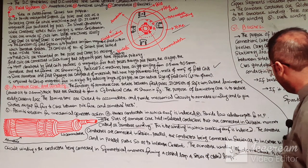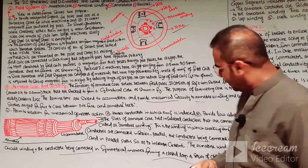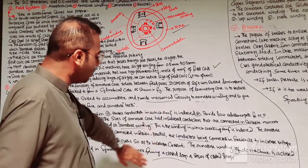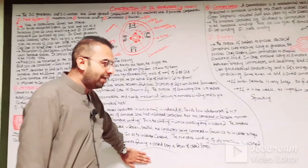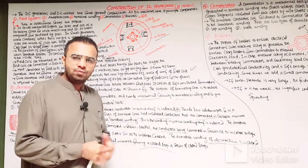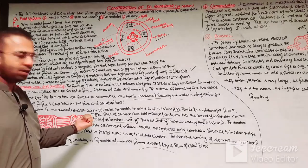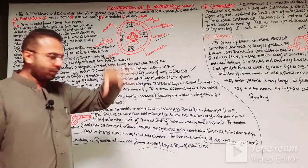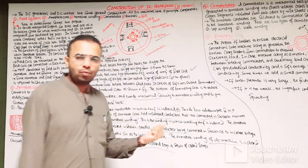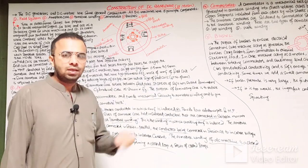The armature winding of a DC machine is a closed circuit winding, with conductors connected in a symmetrical manner forming a closed loop or series of closed loops. The armature core houses the armature conductors in which the working EMF is produced, and it offers low reluctance paths to produce the necessary EMF in the windings of the DC machine.